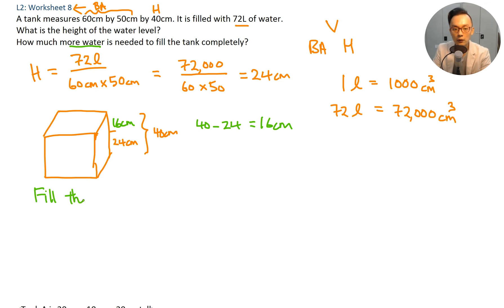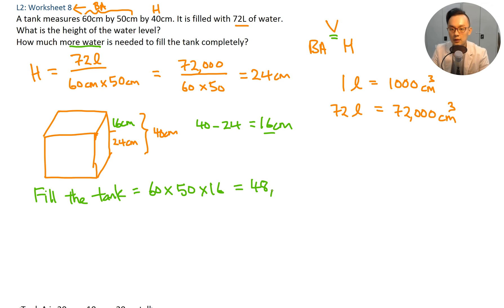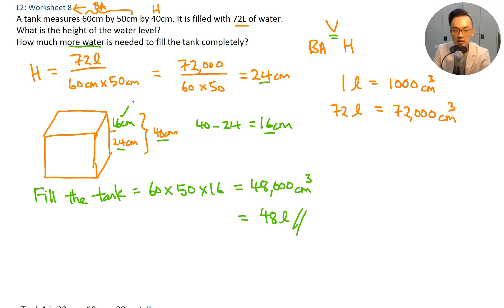To fill the tank, I need volume: base area times height. Base area is 60 times 50, and the remaining height is 16 cm. So 60 times 50 times 16 equals 48,000 cubic centimeters. If I want to change to liters, divide by 1000, which gives 48 liters. In this question, find the current height first (24 cm), subtract from the total height (40 cm) to get 16 cm, then multiply by the base area to find the volume. Convert to liters or cubic centimeters depending on what the question asks.